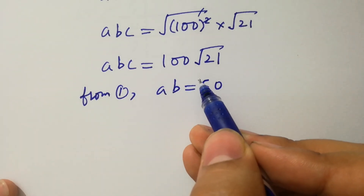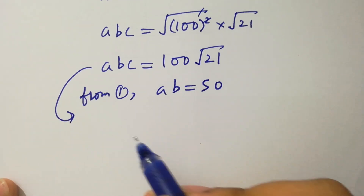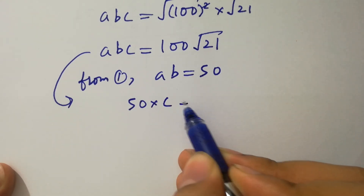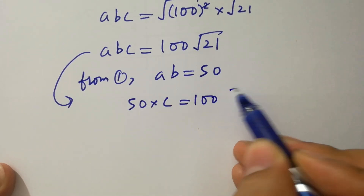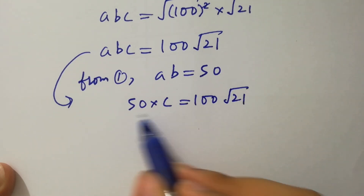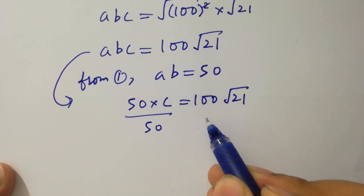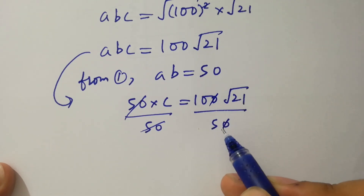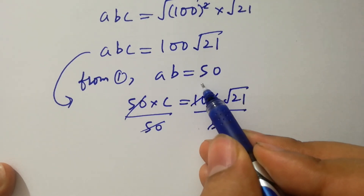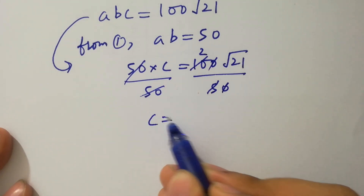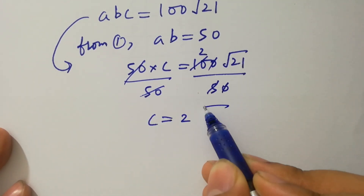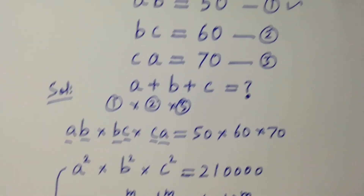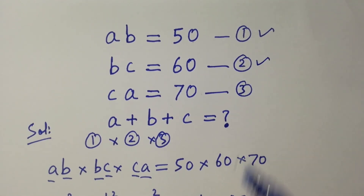From the first equation, ab equals 50. Since abc equals 100 square root of 21, substituting gives 50 times c equals 100 square root of 21. Dividing both sides by 50, the 50s cancel, giving c equals 2 square root of 21.